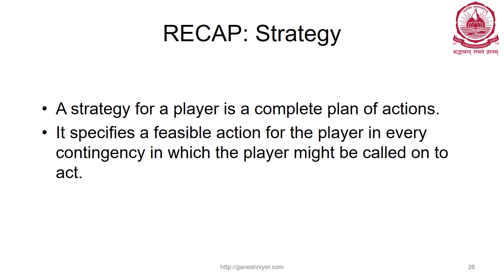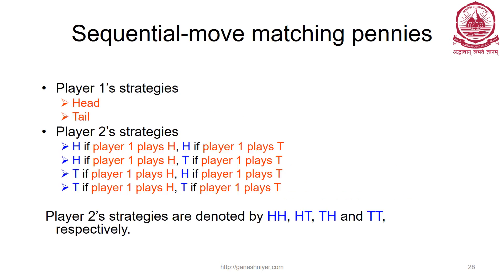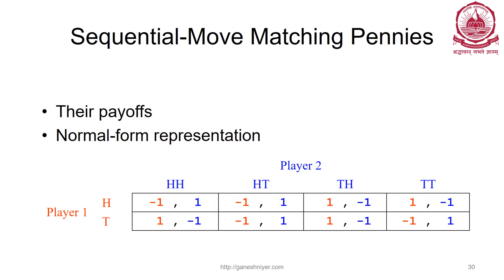To recap: a strategy is a player's complete plan of action. It specifies a feasible action for a player in every contingency in which the player might be called on to act. A combination of strategies gives each player their payoff or utility. For example in matching pennies: if he chooses head I choose head; if he chooses tail I choose head; and so on — then find the equilibrium. This shows you can represent a sequential game in matrix form and a simultaneous game in a game tree — both representations are possible.